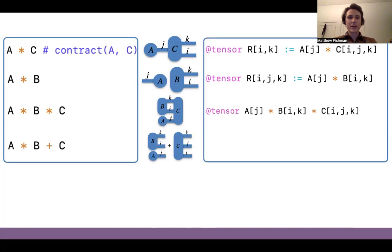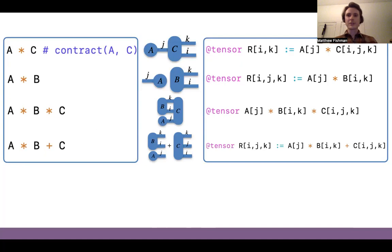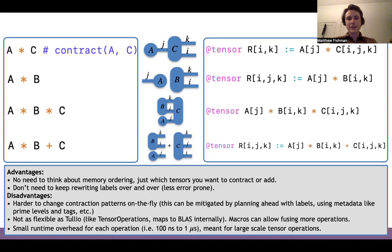As we get to more complicated operations, you can see that with iTensors, the fact that they remember the identifiers of the indices makes it easy to represent complicated operations like contractions and additions. Whereas with a traditional Einstein summation-based interface, you have to keep adding the labels over and over to the tensors because the labels aren't carried around with the tensors. The advantages of iTensor are that you don't have to think about memory ordering, just which tensors you want to contract or add, and you don't need to keep rewriting the labels.